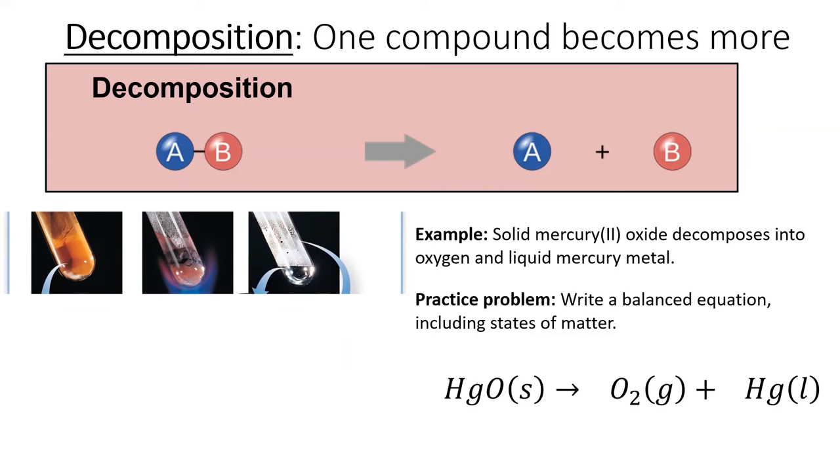Remember that mercury is one of the weirdos of the periodic table. Its symbol is Hg, and it's the only metal that exists as a liquid at room temperature.